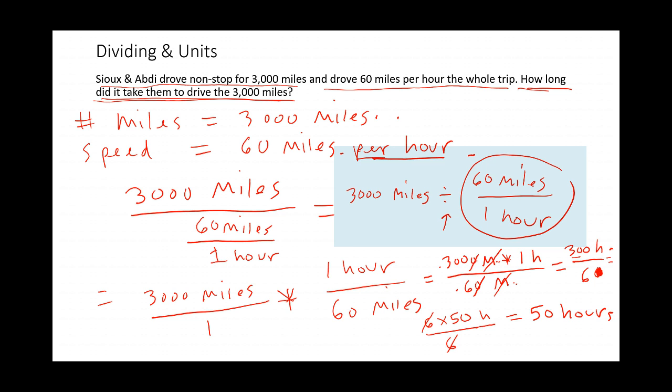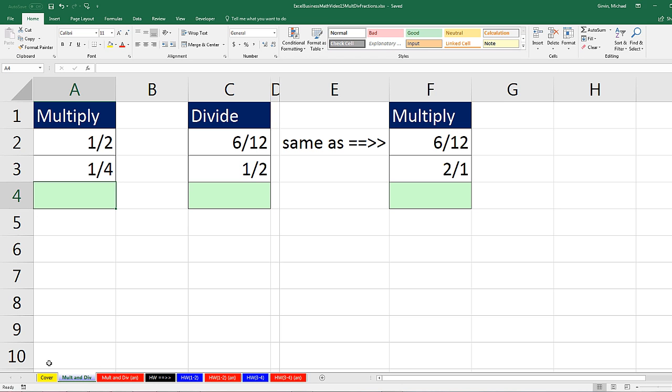So here we saw an example of dividing fractions, inverting, and multiplying. So we saw multiplying again. And then we saw that we're allowed to cancel not only factors like our 6, 6, but also units. Now we want to go over to Excel and take a look at multiplying and dividing fractions in Excel. Now over here in Excel, we're on the sheet multiply and divide.